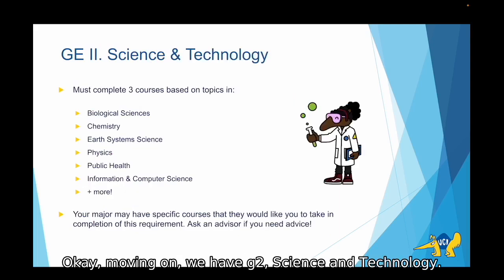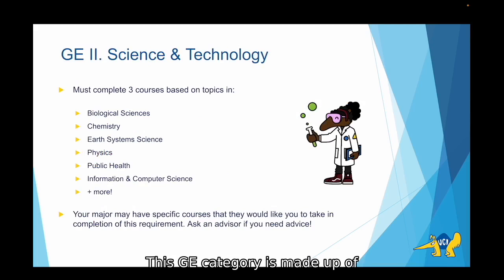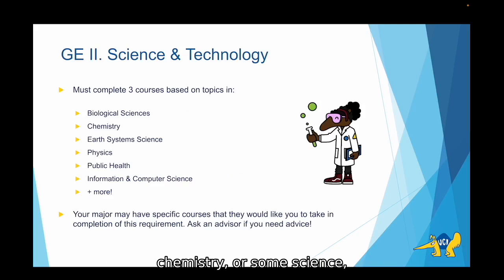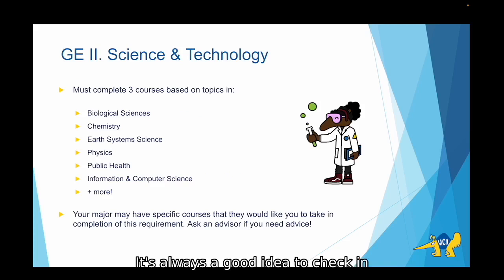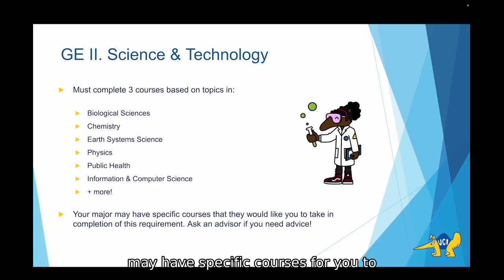Moving on, we have GE 2, Science and Technology. This GE category is made up of three courses based on topics like biology, chemistry, earth system science, physics, and many more. It's always a good idea to check in with an advisor about your major, as it may have specific courses for you to take that already complete this requirement.